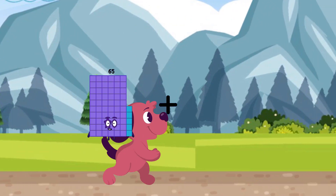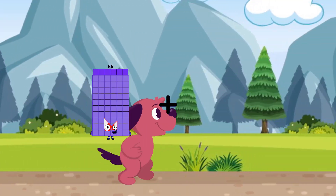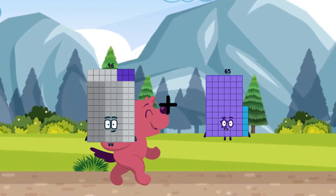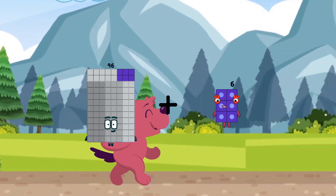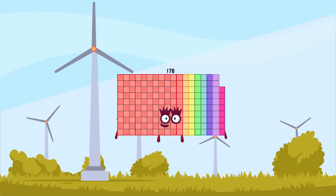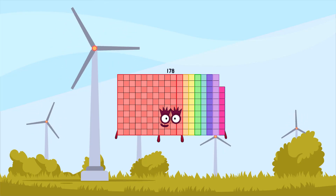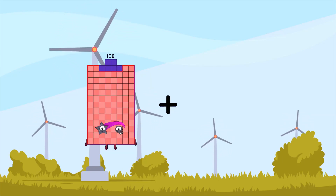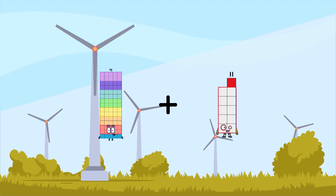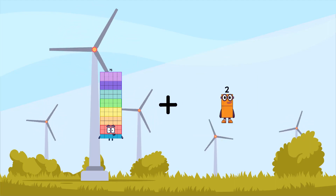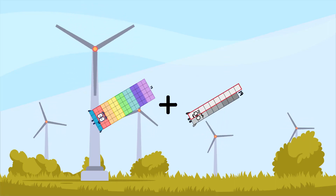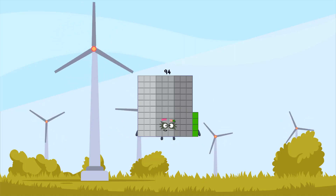96 plus 82 equals 178. 75 plus 19 equals 94.